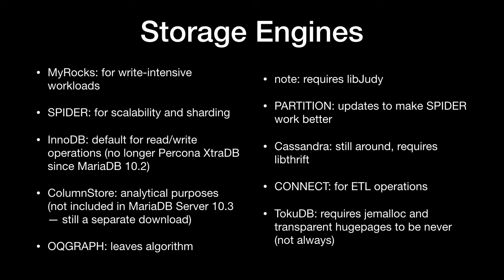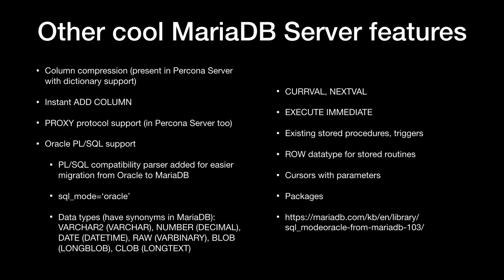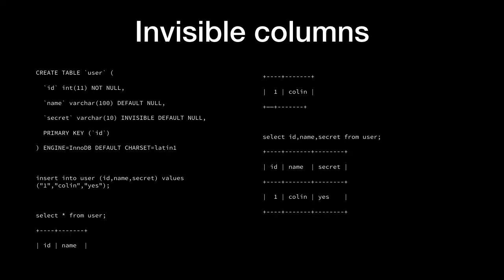There's also the Connect storage engine, which allows you to import MongoDB files and text files and so forth — it's fairly cool. The ability to do column compression is present inside of Percona server with dictionary support as well. From row compression to page compression, you can now create columns that are also compressed and actually see how they're compressing or decompressing.